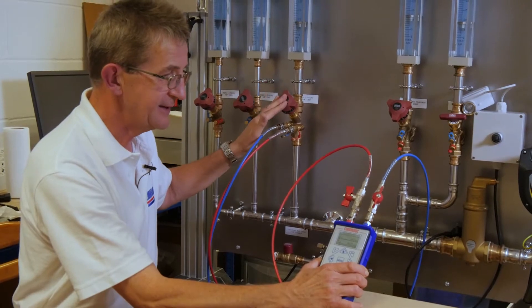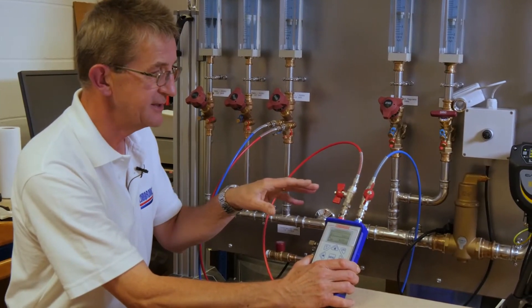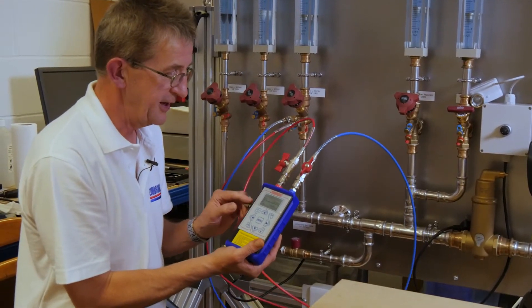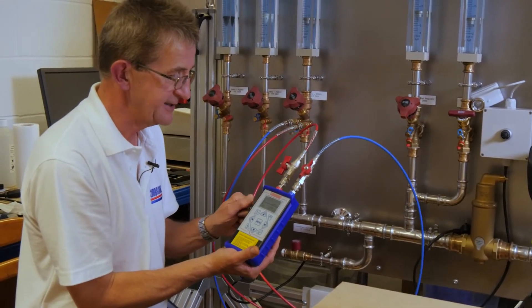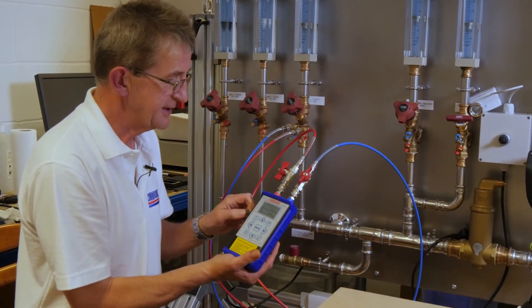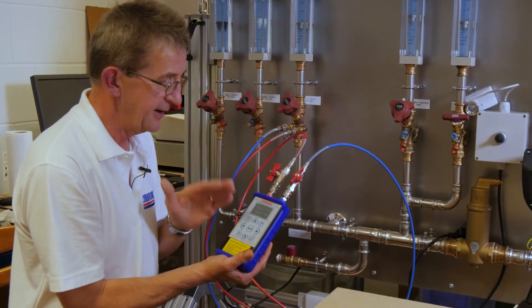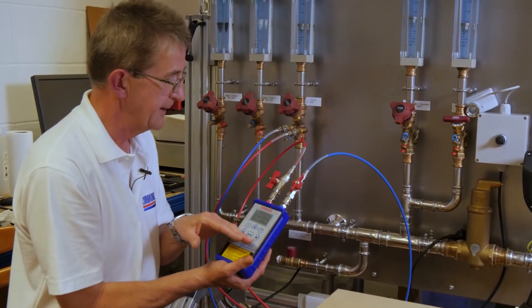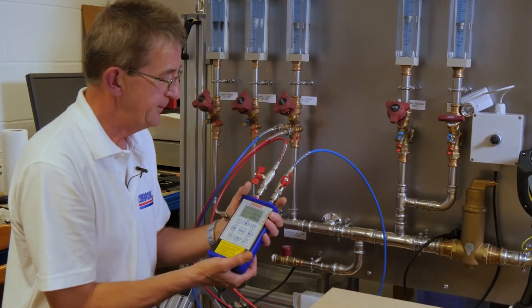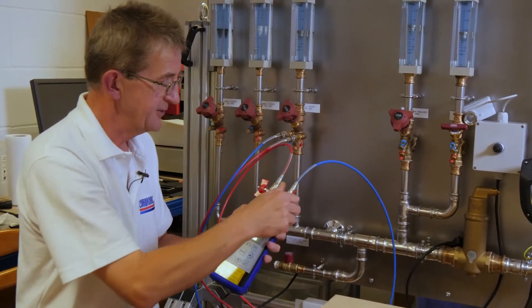Before we do any disconnection of hoses, always ensure that the equalizing valve on the side of the AC6 is open. If you don't open this and you disconnect the hoses there's a danger of over pressurizing the sensor. So the equalizing valve is open. We can now close the isolating valves on the hoses.